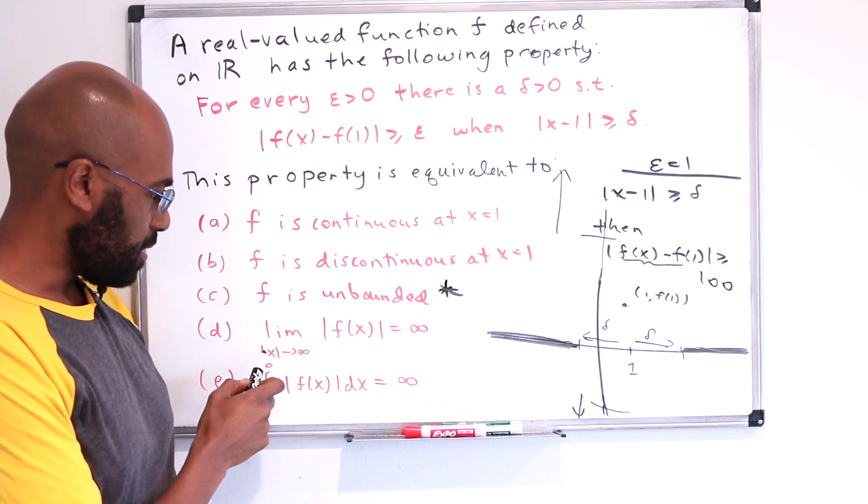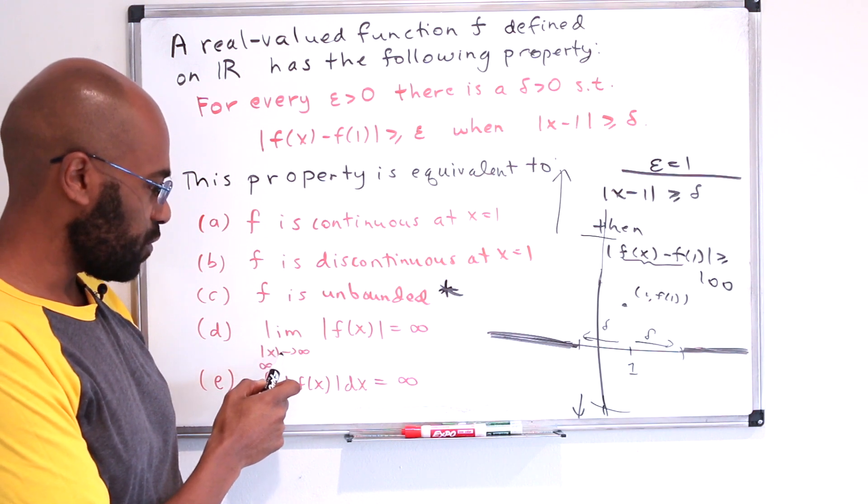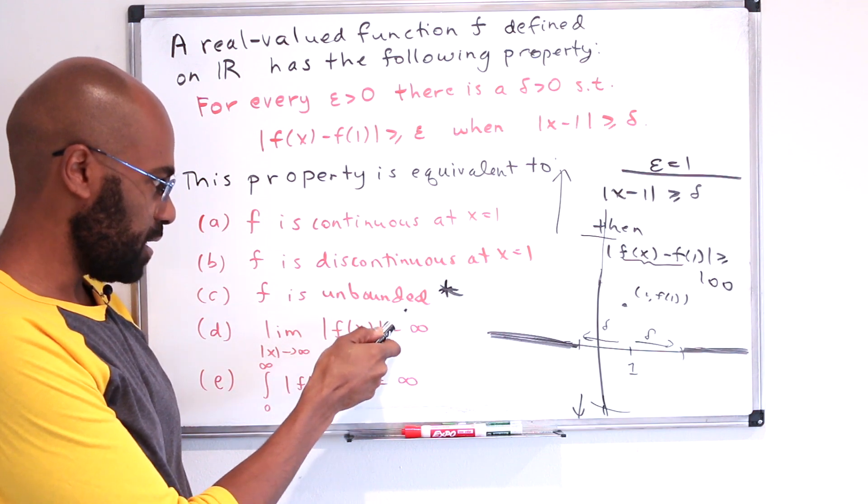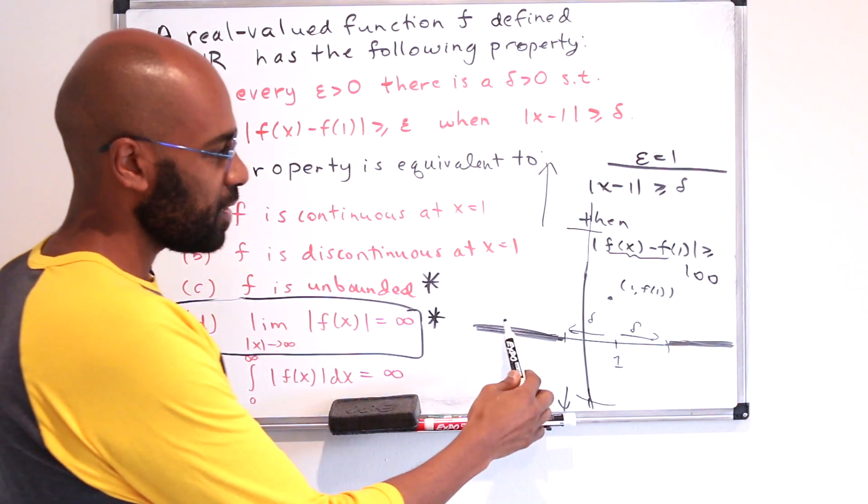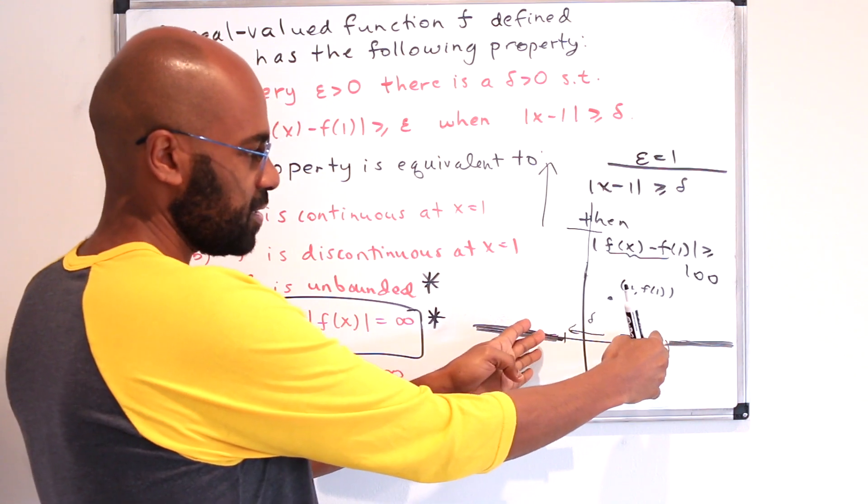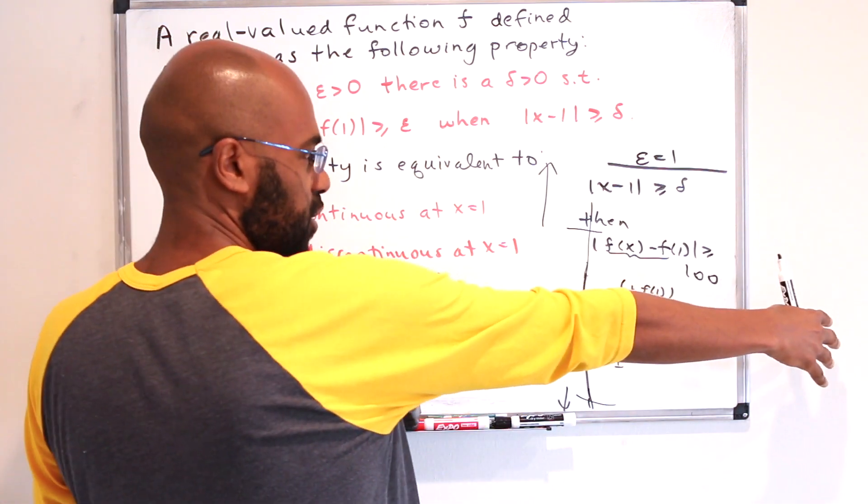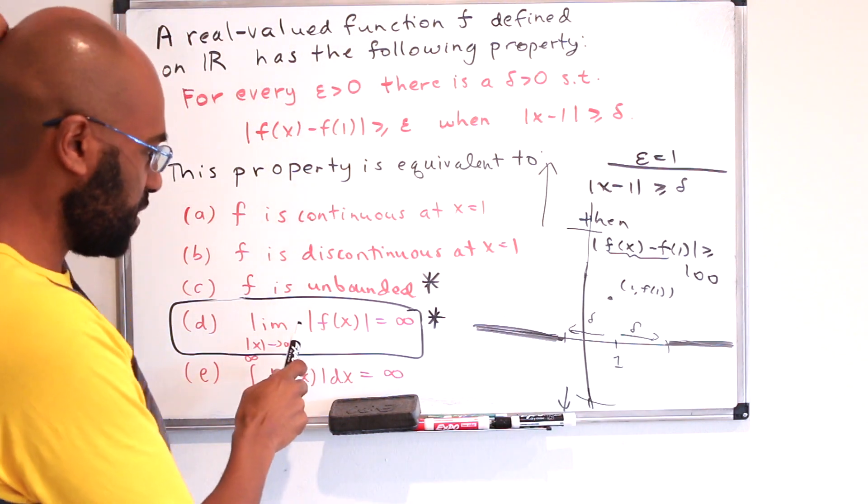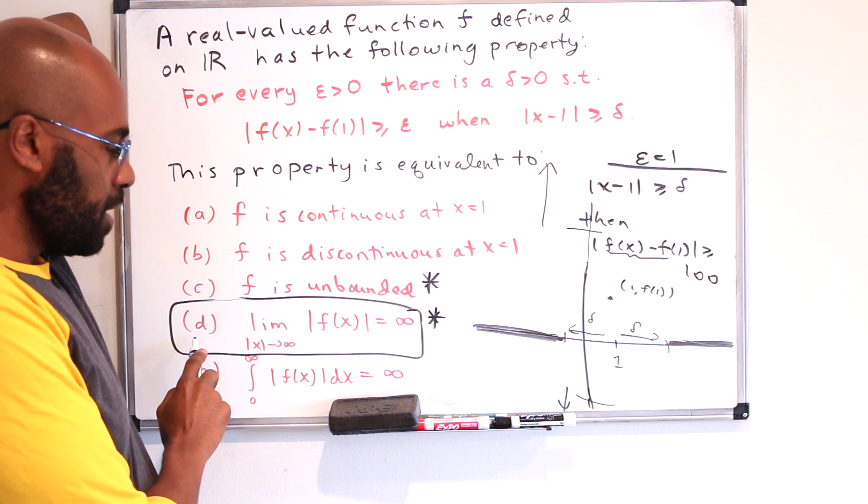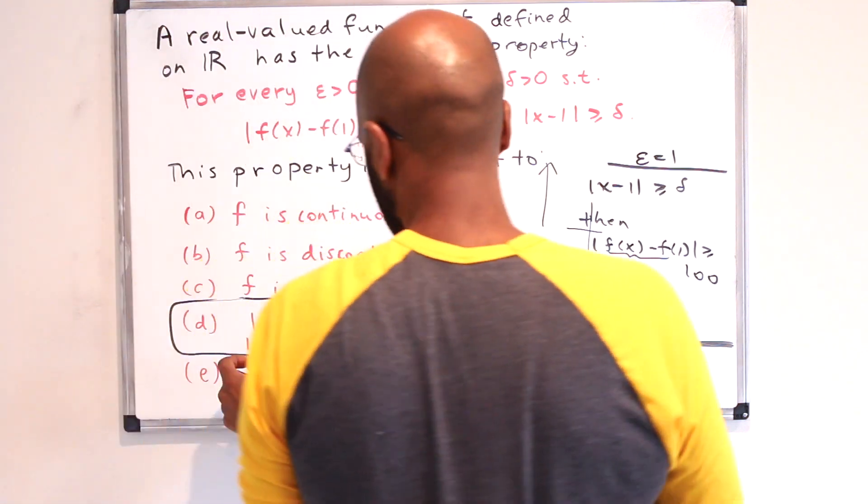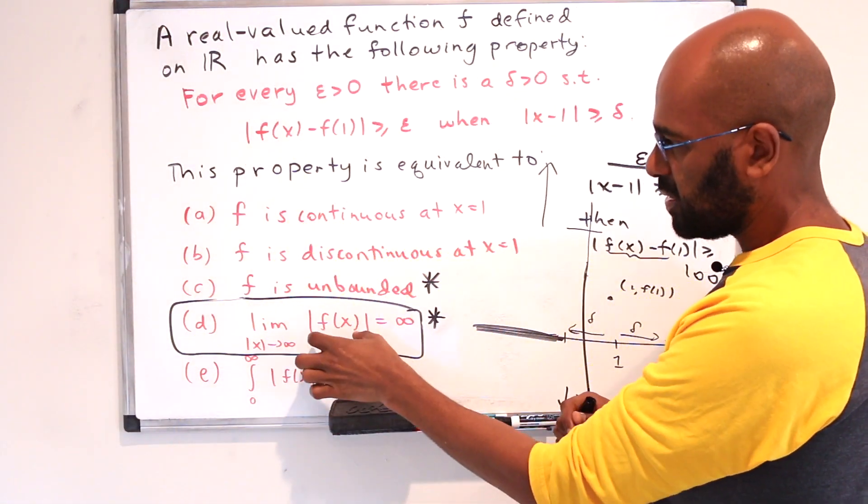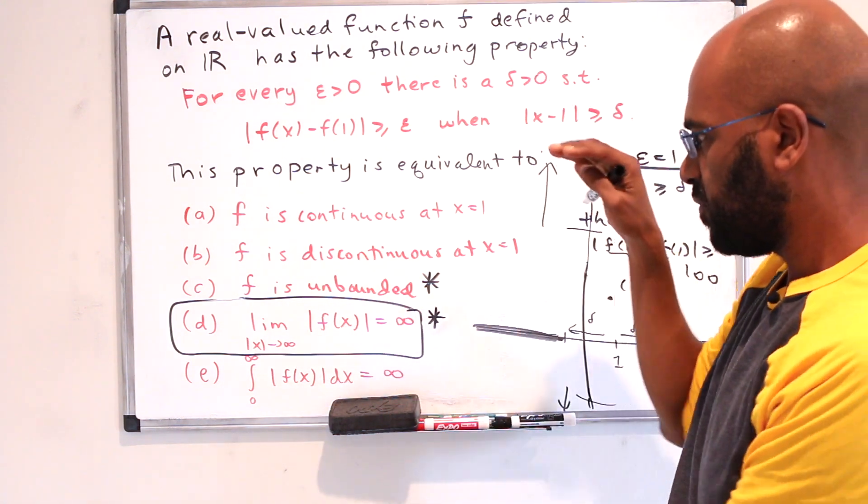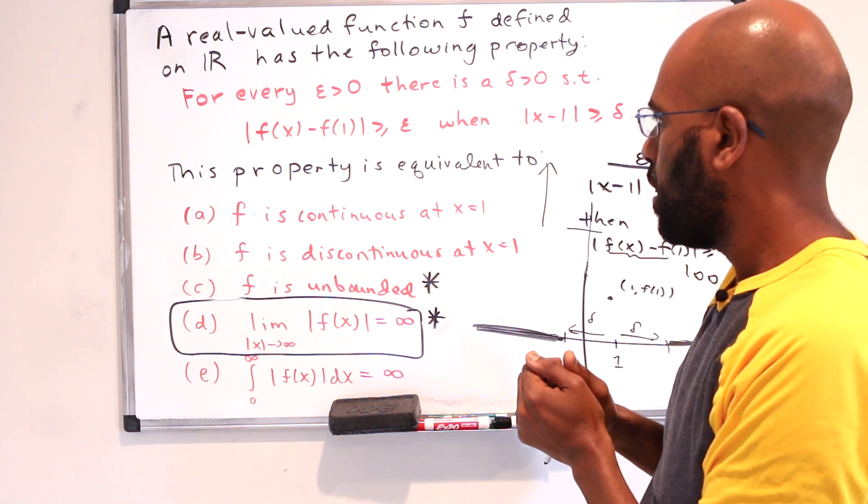And then how do we unpack what this thing is saying? So this is saying that as the absolute value of x goes to infinity, the absolute value of f of x goes to infinity as well. If we look at the condition we have here, when x is large in either direction, we get that f blows up in either direction, and that seems to be most reminiscent with choice D, where we have x moving in both directions and something happening with the absolute value of x, which means either f in the positive or negative f.